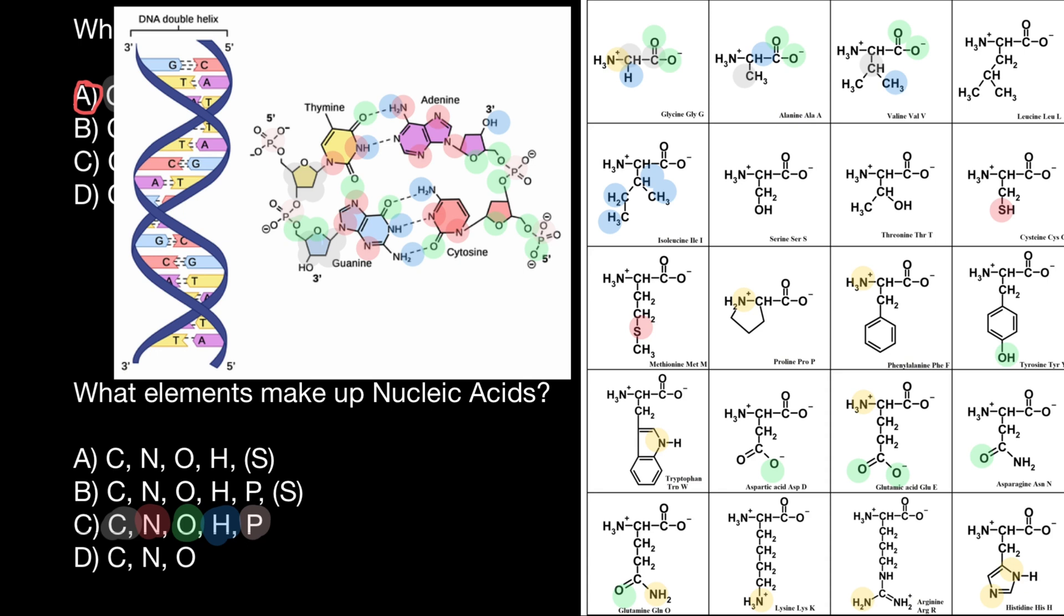So both DNA and amino acids have carbon, nitrogen, oxygen, and hydrogen. Amino acids also have sulfur, only two of them in the R chain. And DNA has the same atoms—carbon, nitrogen, oxygen, and hydrogen—and instead of sulfur, it has phosphorus. So this is the only difference.